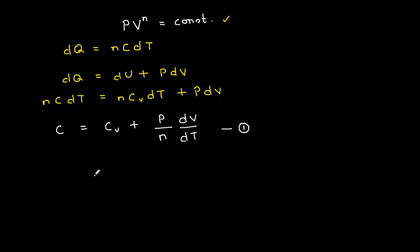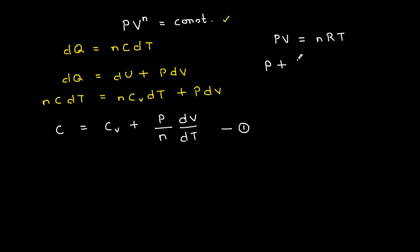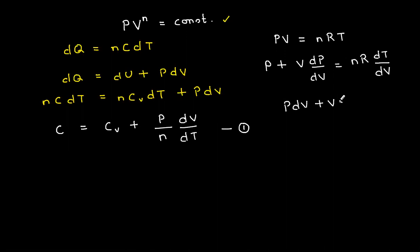First, I have the ideal gas equation: pV = nRT. If I differentiate with respect to volume, I get p plus V·dp/dV. Rearranging the terms gives p·dV + V·dp = nR·dT. I'll call this equation two.